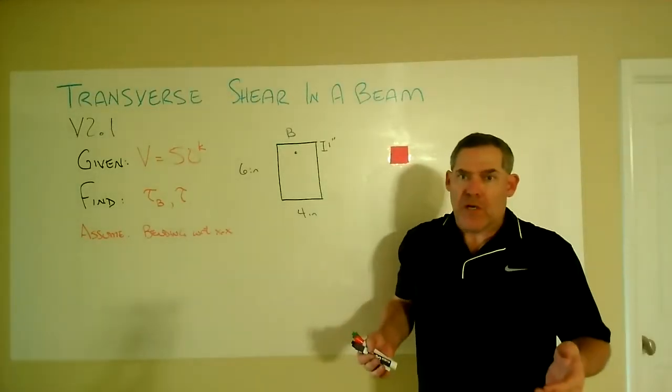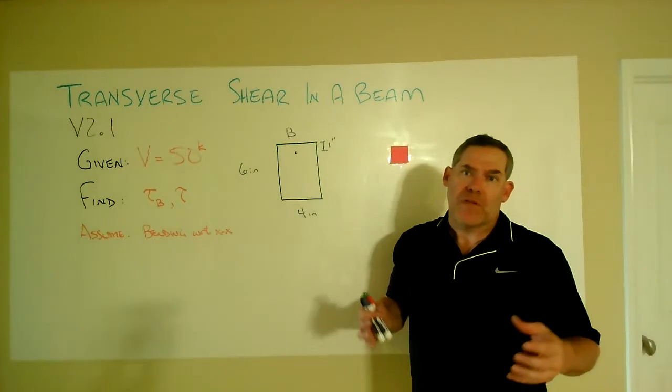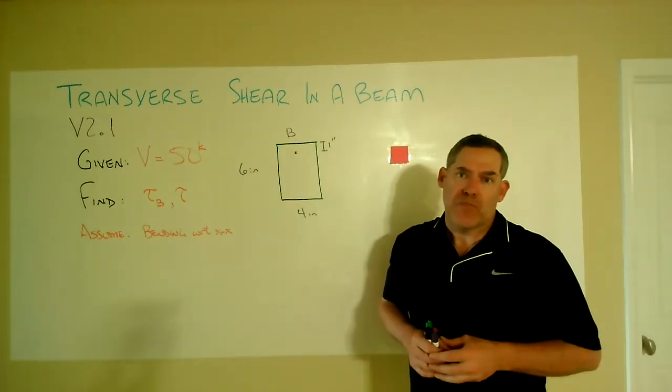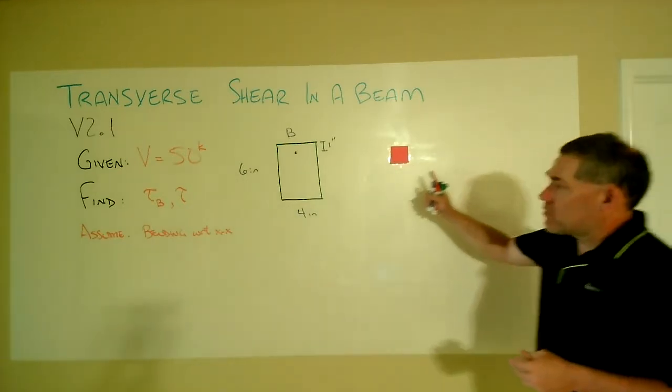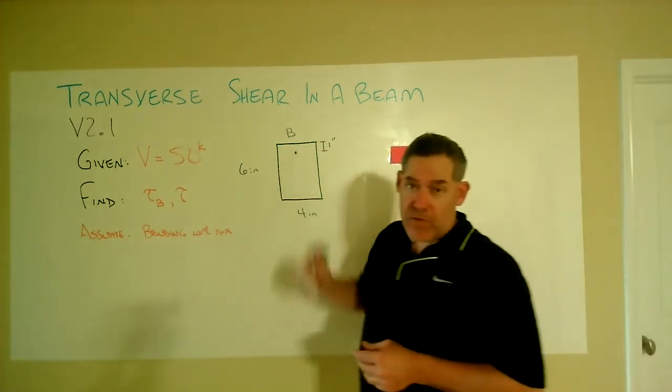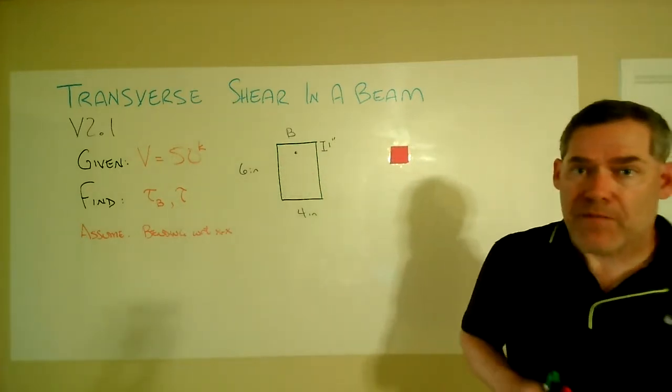Let's begin to put all this shear stress model stuff into real application, at least numerically. And so we'll go all the way through a tau equal VQ over IB calculation for this rectangular cross-section that we have here.